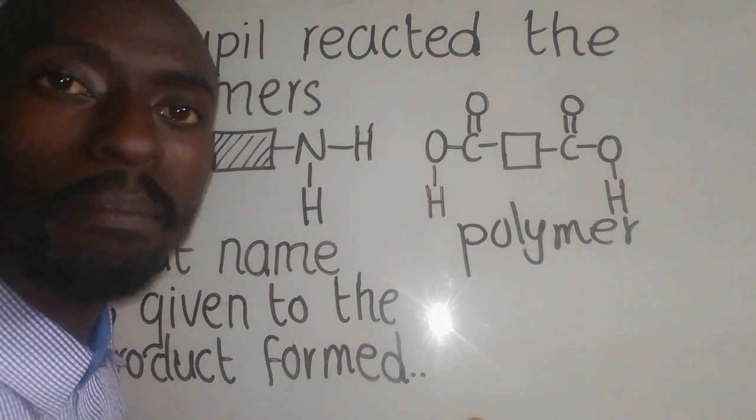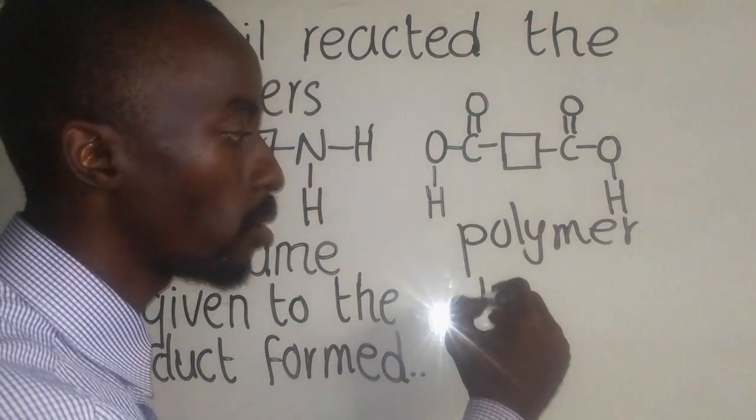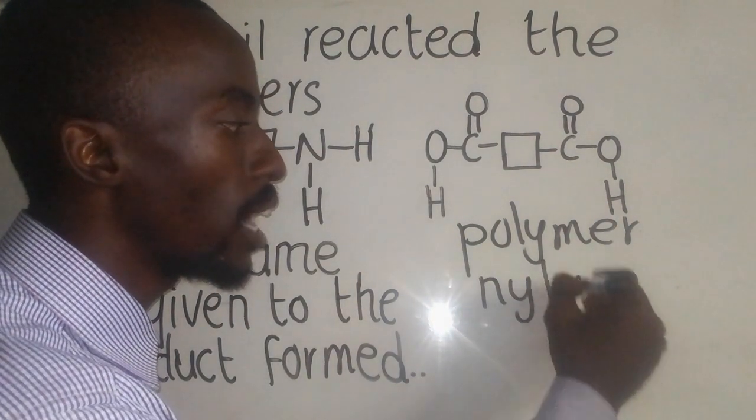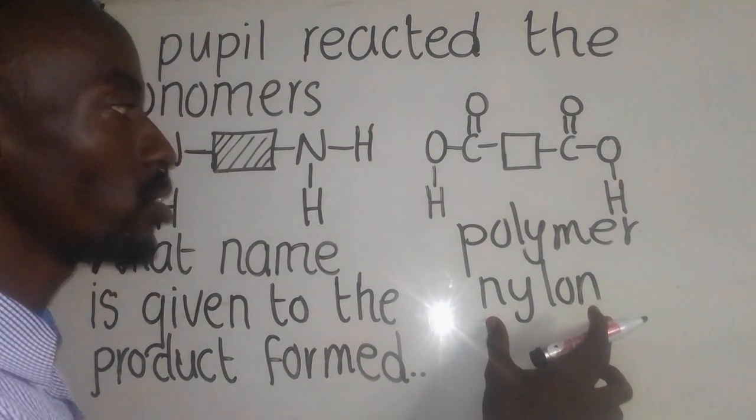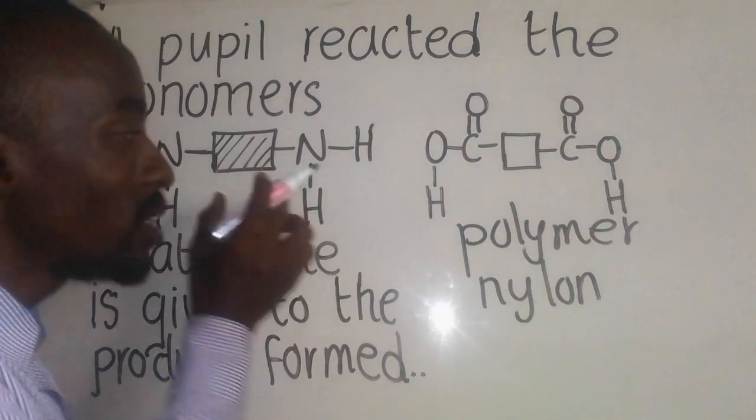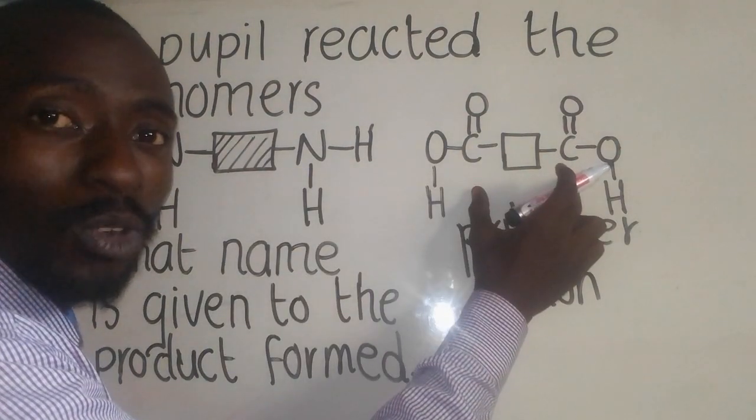Examples of synthetic polymers, we are talking about the nylon. Okay, now nylon is formed from two monomers which is here to call the diamine, which is this one, and the dicarboxylic acid, which is this one.